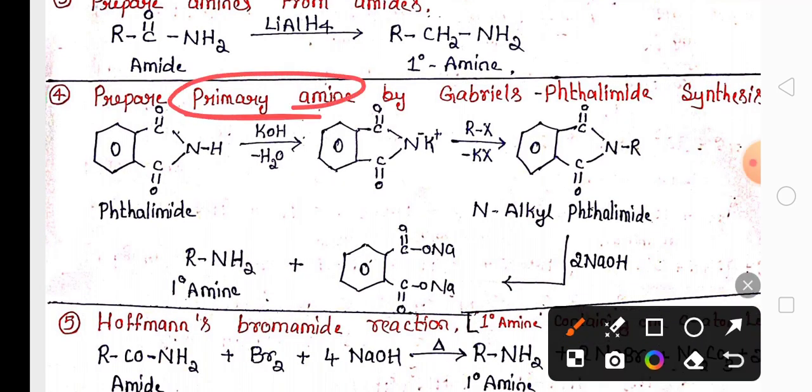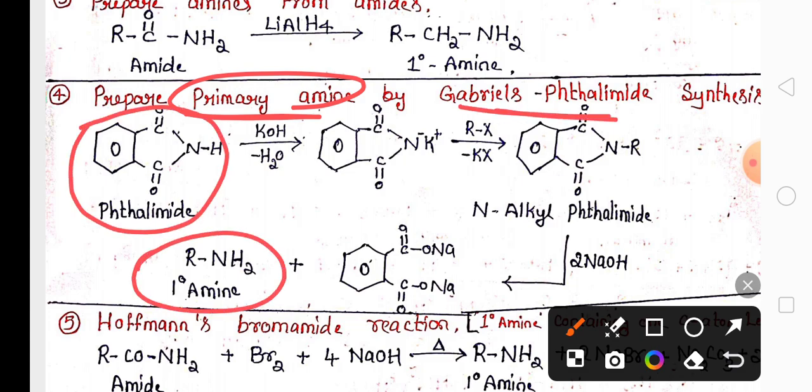Another important reaction of this chapter is preparation of primary amine, aliphatic primary amine by Gabriel phthalimide synthesis. Aromatic primary amines cannot be prepared by this method because aryl halides do not undergo nucleophilic substitution reaction easily.